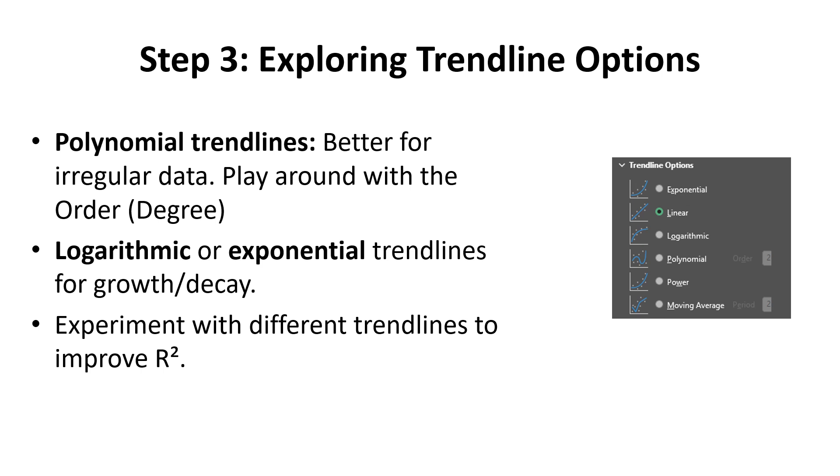Thinking about what might best suit your data, polynomials can be really good for irregular data. Play around with that degree. Logarithmic and exponentials think about growth and decay, which we often see in populations. Experiment with different trendlines to improve your R-squared.